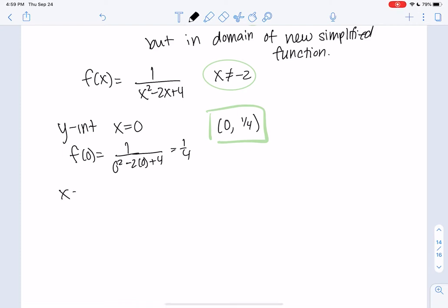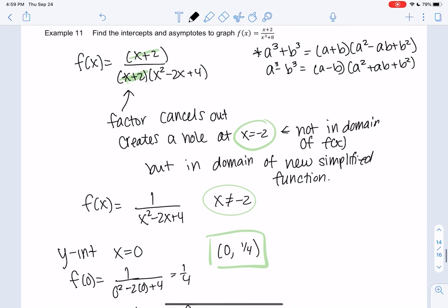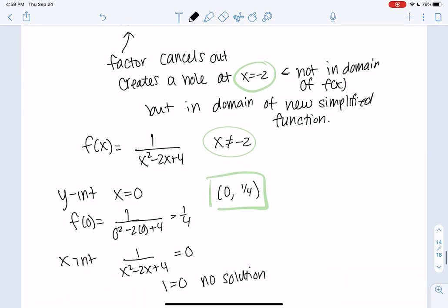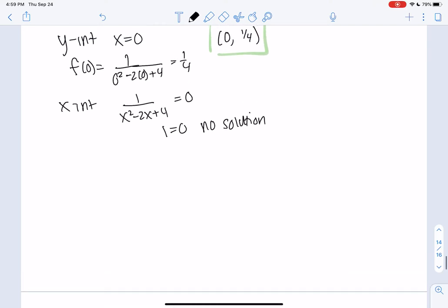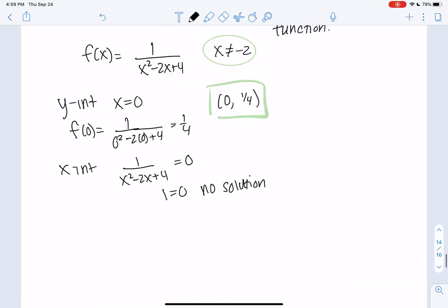The x-intercept is when it equals 0. So I'm going to use the new function, which has no solution because 1 equals 0 has no solution. I'm not using the original function because that x plus 2 canceled out. So we're getting something weird. Alright, and then what else? We want to find, so we found intercepts, and then asymptotes.